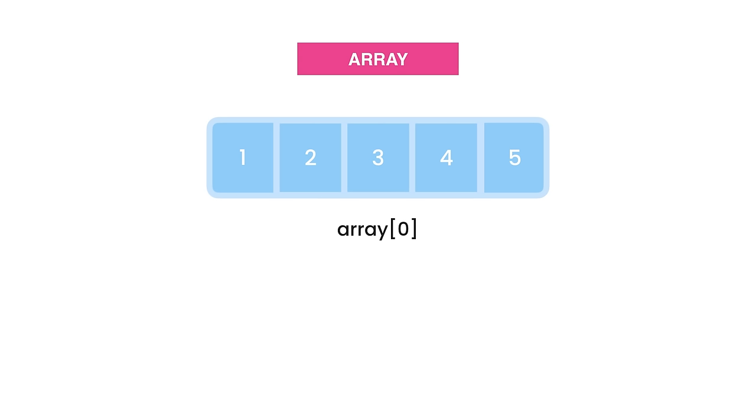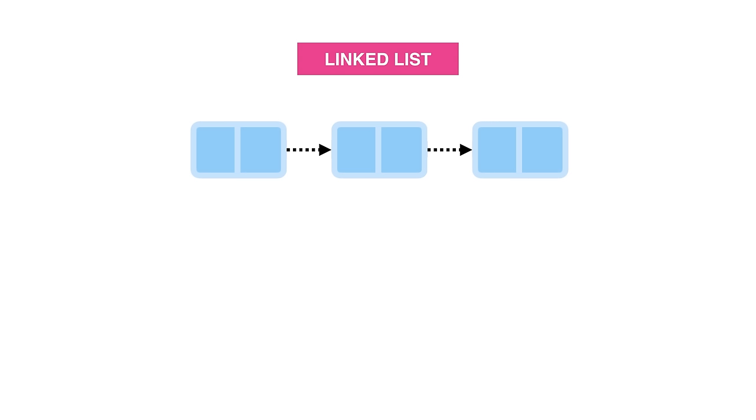Certain operations can be more or less costly depending on what data structure we use. For example, accessing an array element by its index is super fast, but arrays have a fixed length, and if you want to constantly add or remove items, they have to get resized — and this gets costly as input grows. So if that's what we need, we use a linked list. These can grow or shrink quickly, but accessing a linked list element by index is slow. Big companies like Google, Microsoft, and Amazon always ask about big O, and knowing it will make you a better developer.